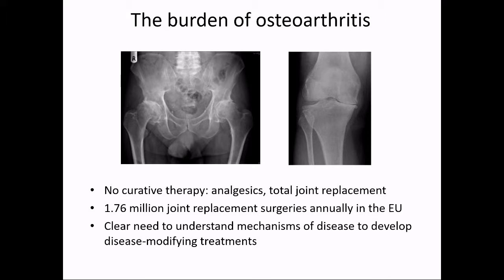We're interested in studying osteoarthritis. Why? It's a very common prevalent disease — almost half of us in this room will develop osteoarthritis during our lifetime. But there is no curative therapy. The main mode of treating disease is through pain management, managing the main symptom, and that culminates usually into total joint replacement. There are almost 2 million arthroplasties annually in Europe. Therefore, there's a clear need to understand the mechanisms of disease to develop disease-modifying treatments for osteoarthritis.